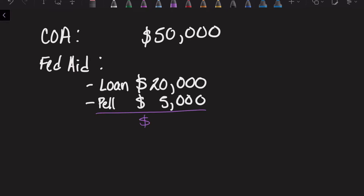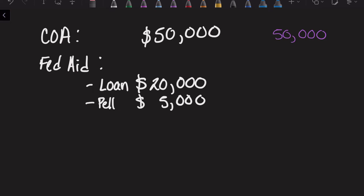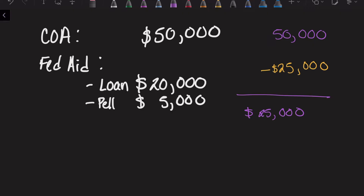What the financial aid office does is take this $25,000 that you are eligible for in federal aid and subtract it from your $50,000 Cost of Attendance. So now you have $25,000 in offered aid and still have $25,000 in unmet need. If you stop right here and don't get any extra funding — because you didn't apply to scholarships, weren't eligible, or didn't receive any grants — your unmet need is $25,000.